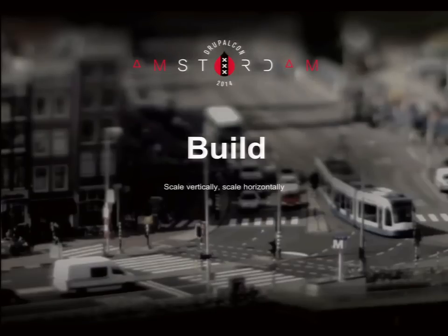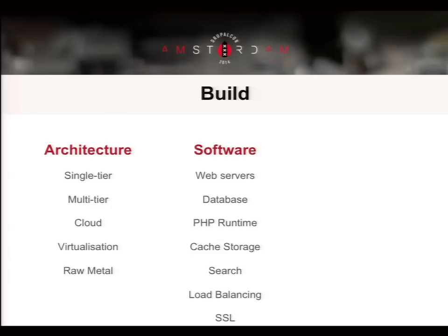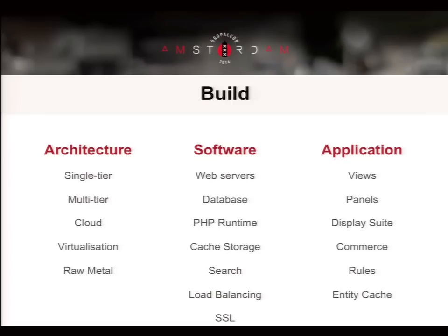Let's talk about Build. I have a catchphrase here: scale vertically, then scale horizontally. The key thing is you use the first before the second — you always scale vertically before you scale horizontally. The build section is broken down into three areas: first, architecture — covering the different kinds of architecture in the industry; second, software — options available and common in the Drupal industry; and third, application — things from inside Drupal itself, though this talk doesn't go too deeply into that component.